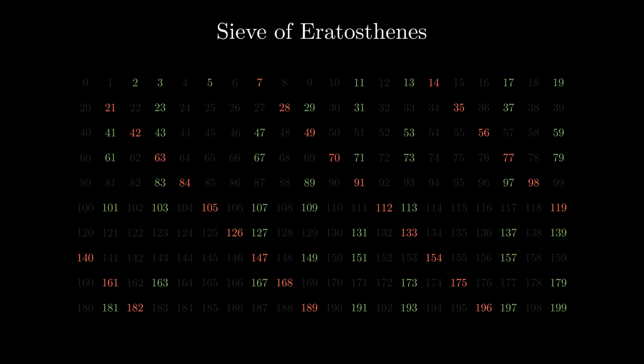As all the multiples of p like 2 times p, 3 times p, 4 times p, 5 times p have already been removed from the list of possibly primes when we were processing the numbers 2, 3, 5, etc. The first number that hasn't been touched yet is p times p.